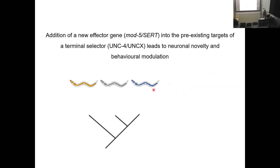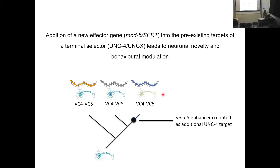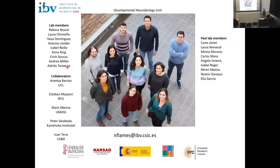In summary, using different species of nematodes, we identified a new serotonergic phenotype in VC4 and VC5 neurons. This phenotype arose through co-option of one enhancer to these particular neuron types via the existing terminal selector ANP4, which has expanded its targets to now include MOD5. This leads to serotonin staining of VC4 and VC5 and changes in egg-laying behavior. I finish by thanking the people in the lab, especially Arantxa, Peter Svoboda from the Karolinska, and thank you all for coming — I'm happy to take questions.